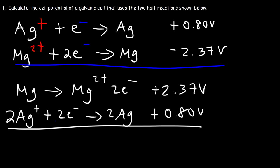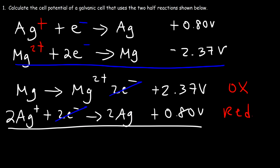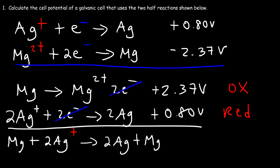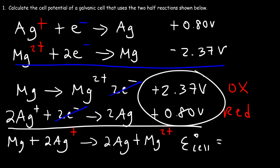When we add these two equations, the electrons will cancel, because this is a redox reaction. One reaction has to be oxidation, the other has to be reduction. Anytime the electrons are on the right side, it's oxidation; if it's on the left side, it's reduction. So on the left we have the magnesium atom and the silver ion, and on the right we have silver metal and magnesium ion. The cell potential is 2.37 plus 0.8, which gives us positive 3.17 volts for this galvanic cell.